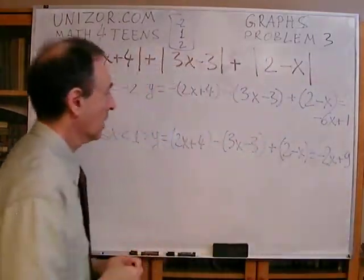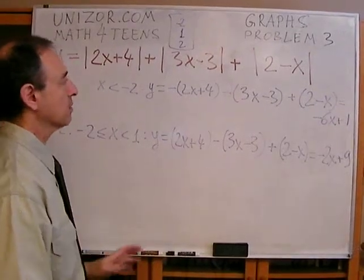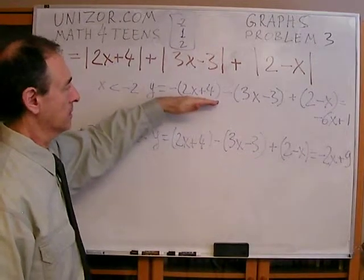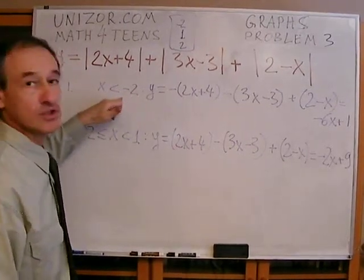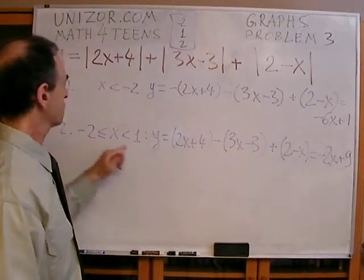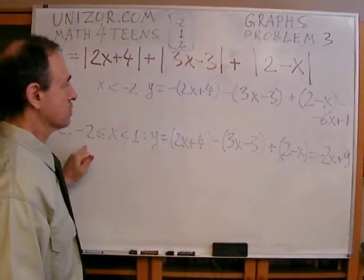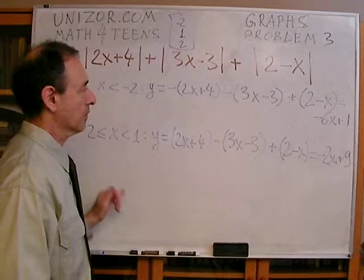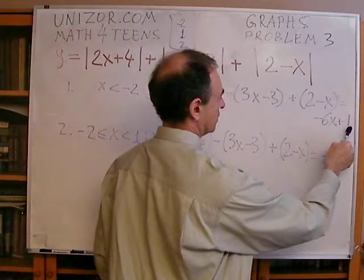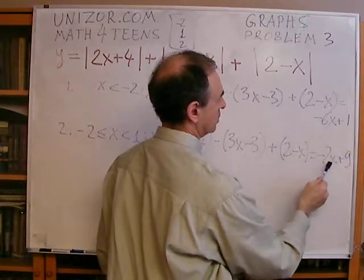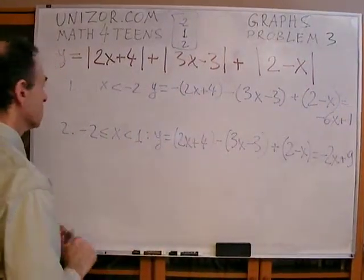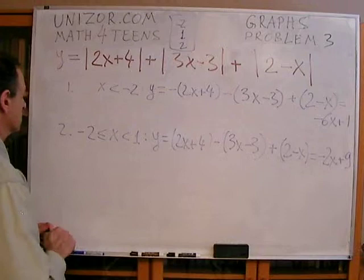Now here, we have to do a mandatory check. This function is for values which are less than minus two, and this function is from minus two to one. And when x is equal to minus two, they should come up with the same number. Let's check. If x is equal to minus two, this is twelve plus one, thirteen. If x is equal to minus two, times minus two is four, plus nine, thirteen. Good. Check. So so far we didn't make any arithmetic carols, which is a good sign.